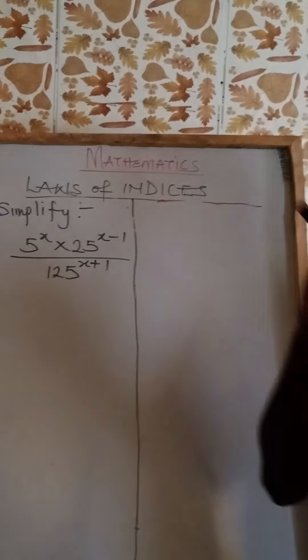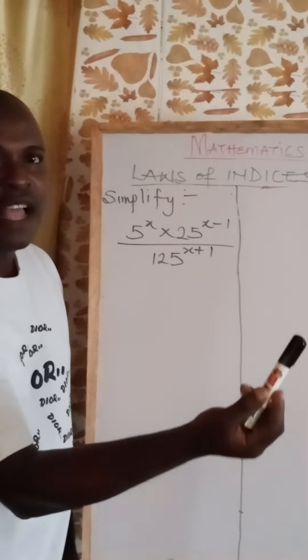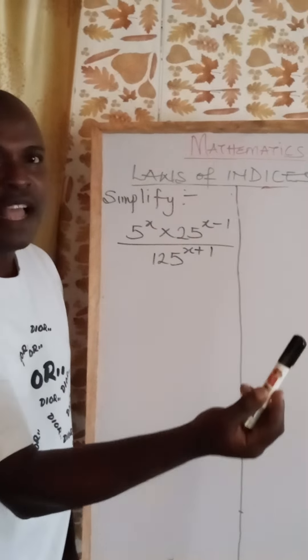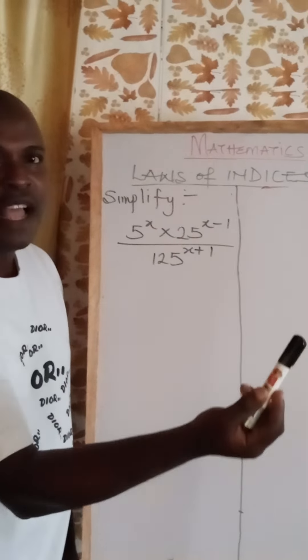Let's figure out the question. We have 5 raised to the power of x, times 25 raised to the power of x minus 1, everything divided by 125 raised to the power of x plus 1. You will notice that we have three terms here. The first term is already simplified. The second term has 25 raised to the power of x minus 1, which we can simplify in terms of 5. And 125 can also be simplified in terms of 5.